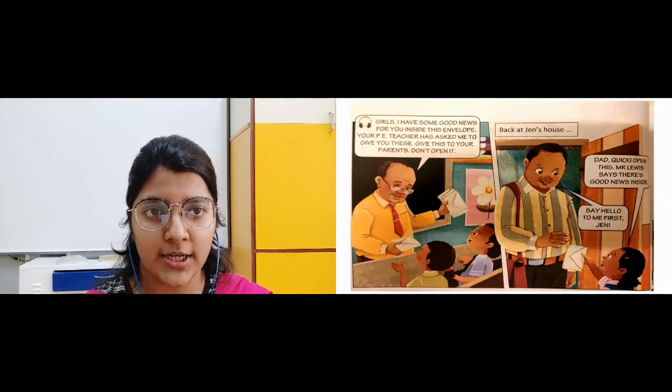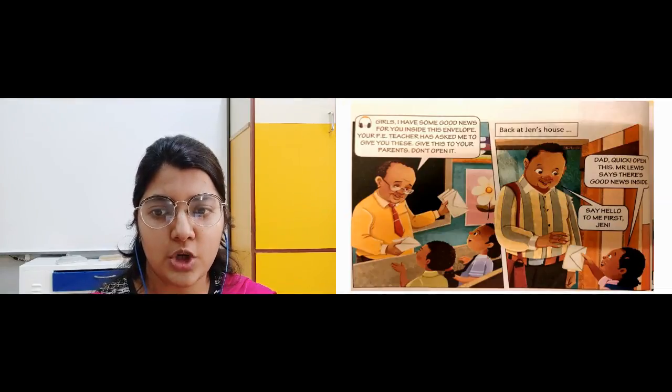Back at Jen's house, there is a kid called Jen. When he is at home, dad quick open this. Mr. Lewis says there is some good news inside. So he is asking his dad to open this envelope for him.